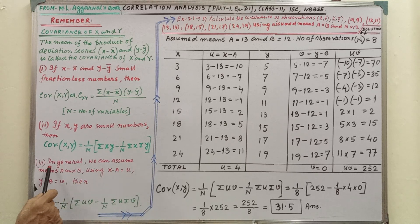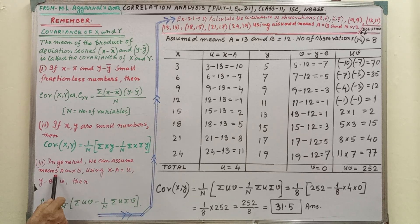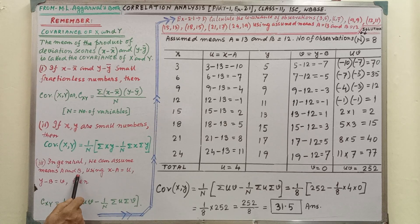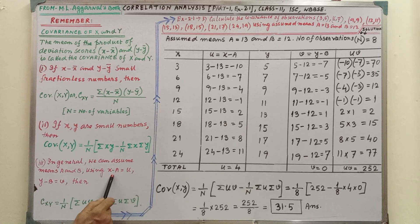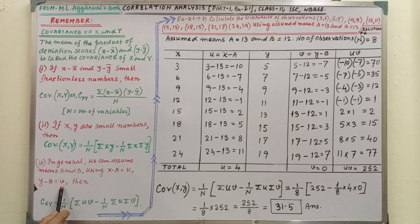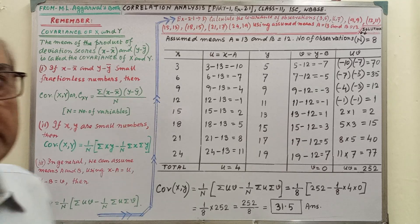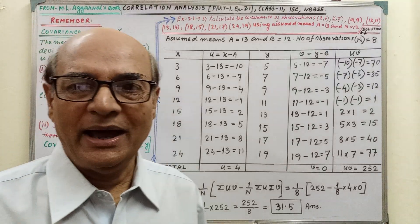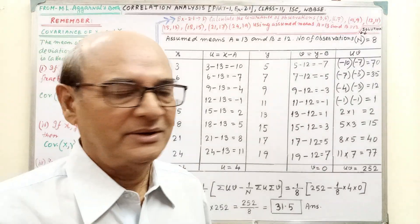And in general, condition three: we can assume means A and B, using x minus A equal to u and y minus B equal to v. Then we have to apply this form. These three points with conditions you have to remember.